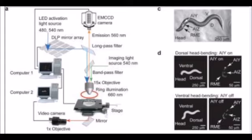The system depicted in figure A shows how light was emitted through an array to specifically activate a single neuron band in the nematodes, while a second computer captured the illumination and movements.